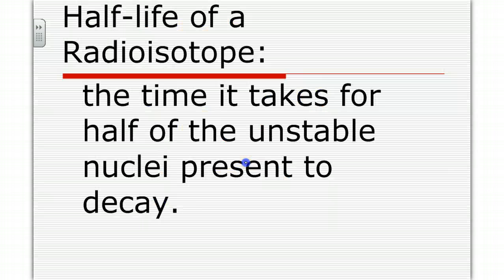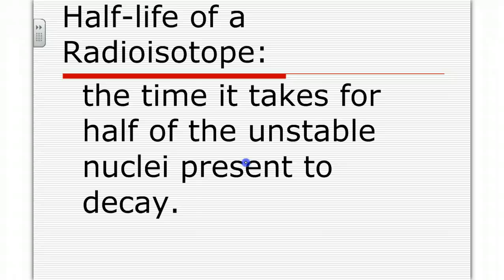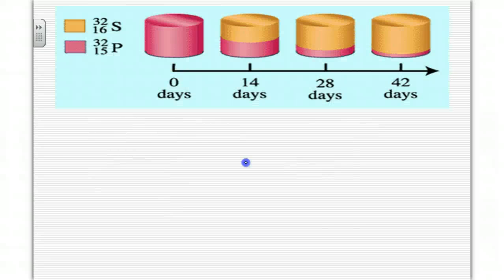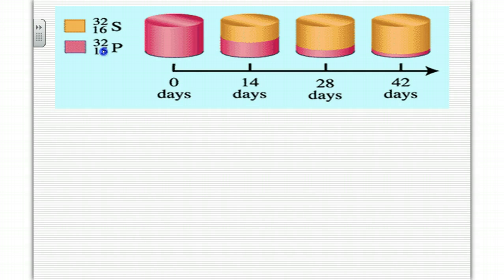Half-life of a radioisotope is the time it takes for half of the unstable nuclei present to decay, meaning half of the isotope becomes stable and the other half remains unstable. For an example, we have phosphorus with a mass of 32, atomic number 15. Notice that at day zero, 100% is considered unstable. However, after its half-life of 14 days,